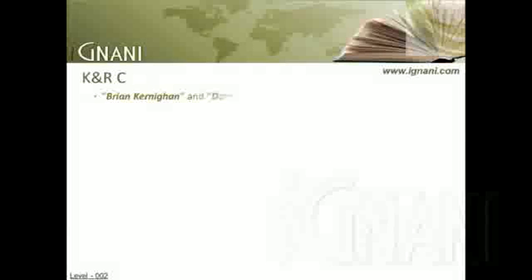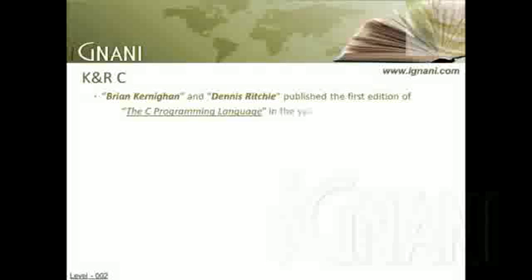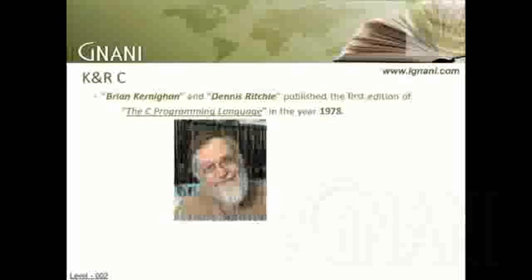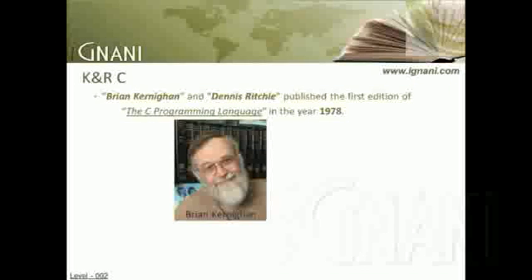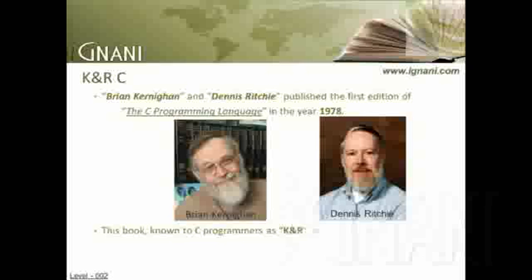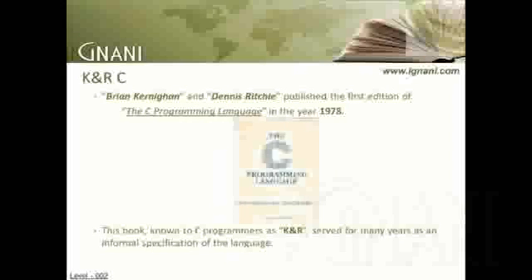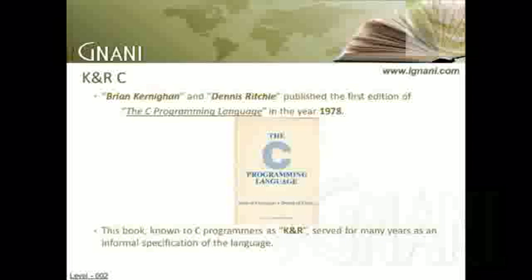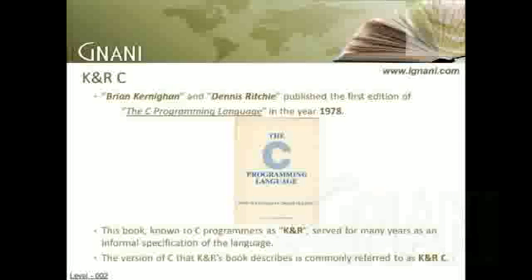Brian Kernighan and Dennis Ritchie published the first edition of The C Programming Language in the year 1978. This book, known to C programmers as K&R, served for many years as an informal specification of the language. The version of C that it describes is commonly referred to as K&R C.